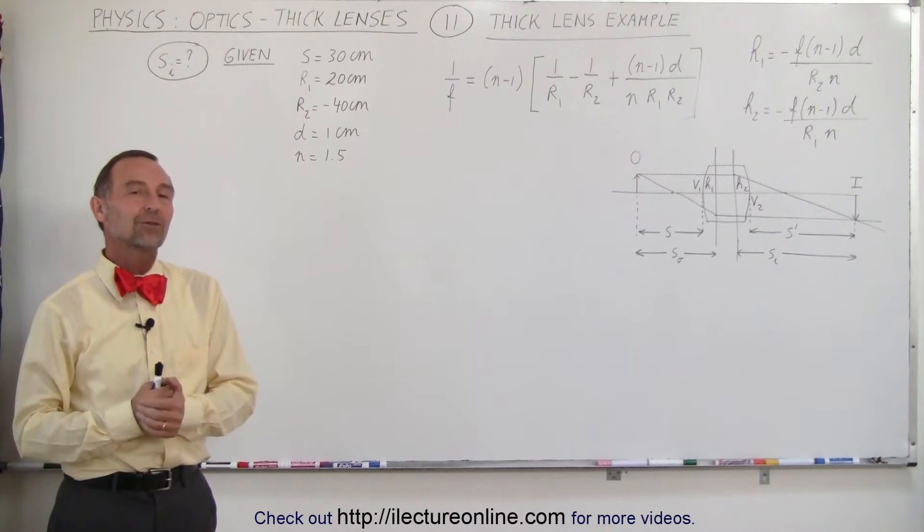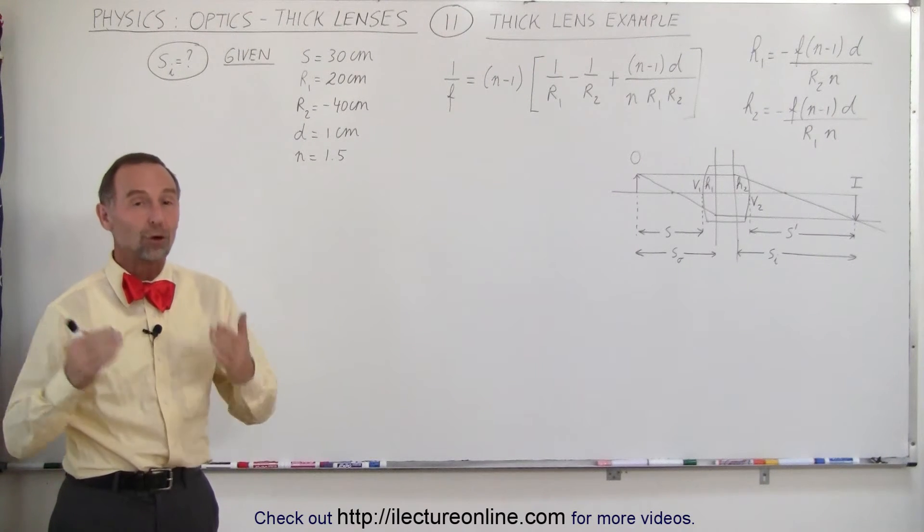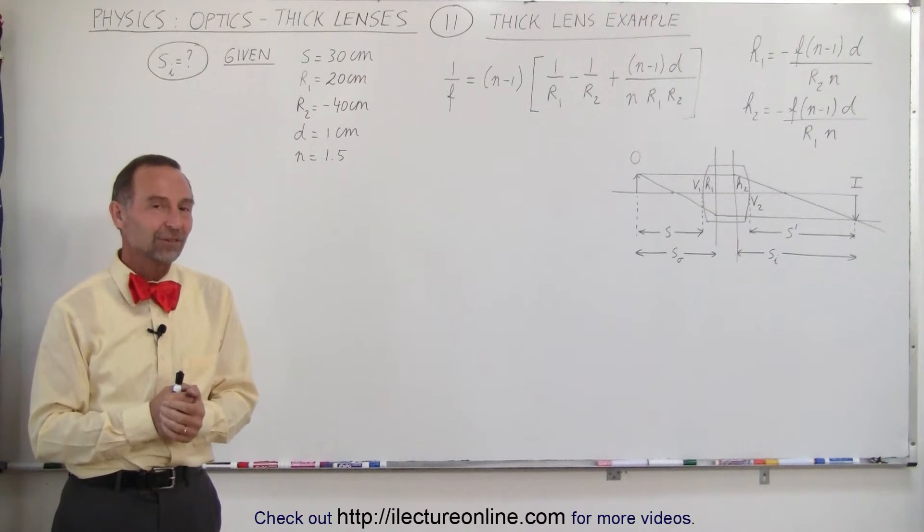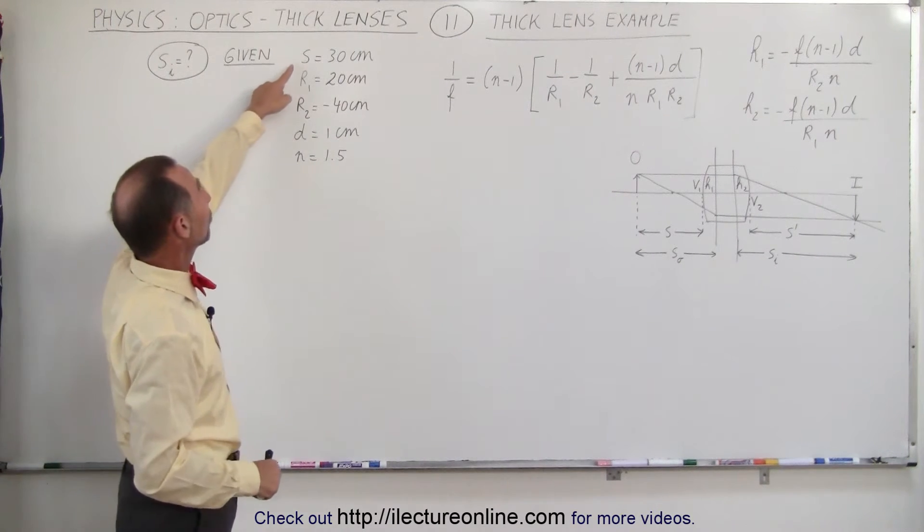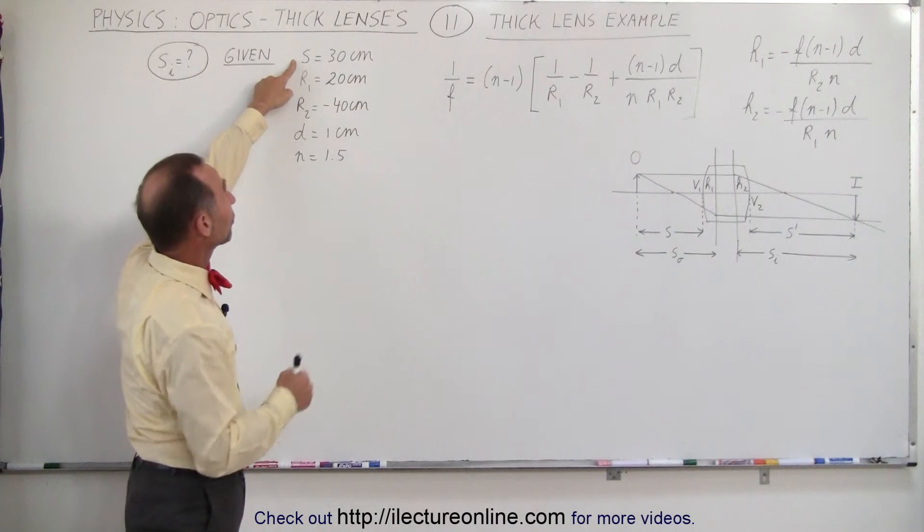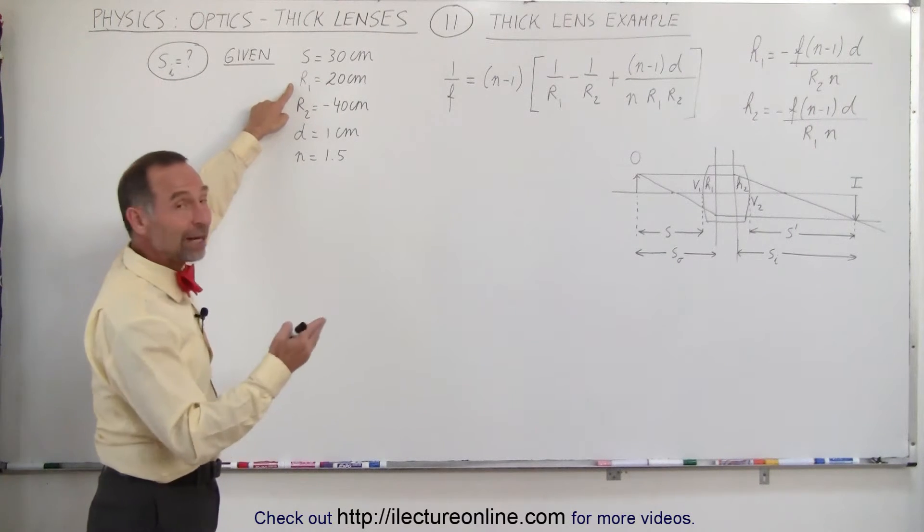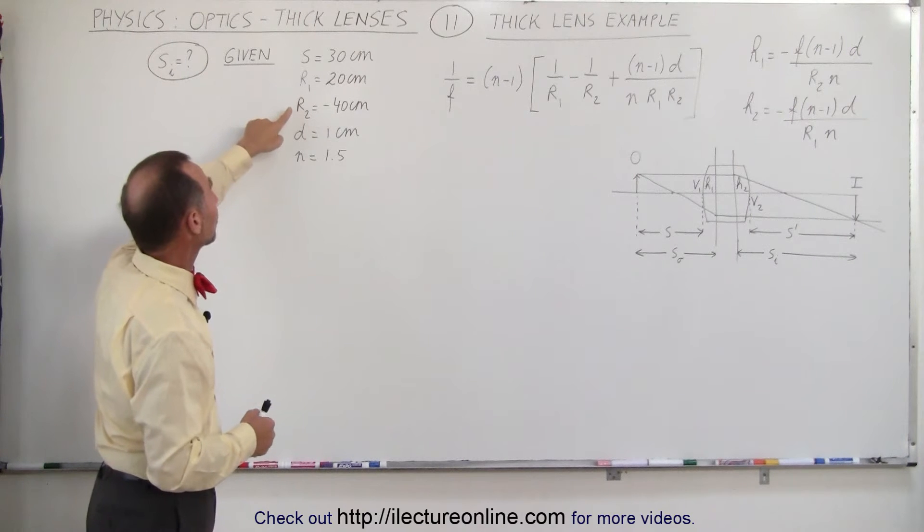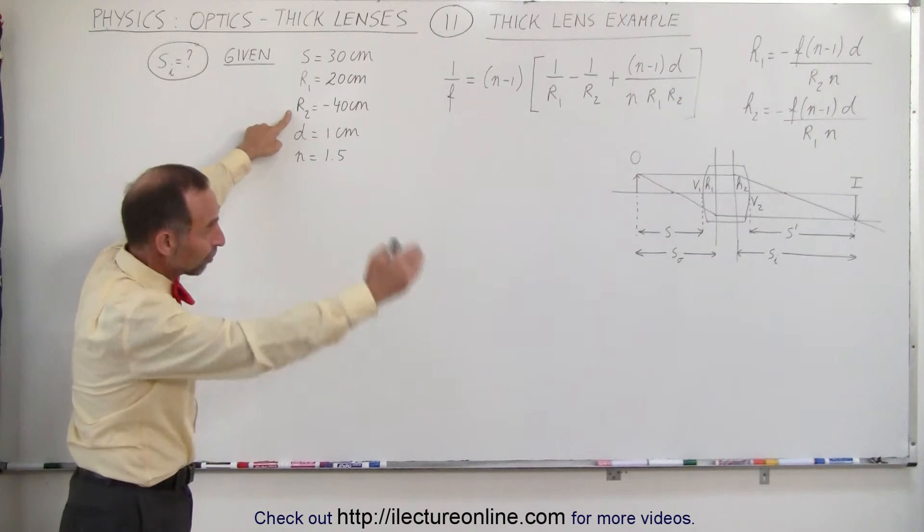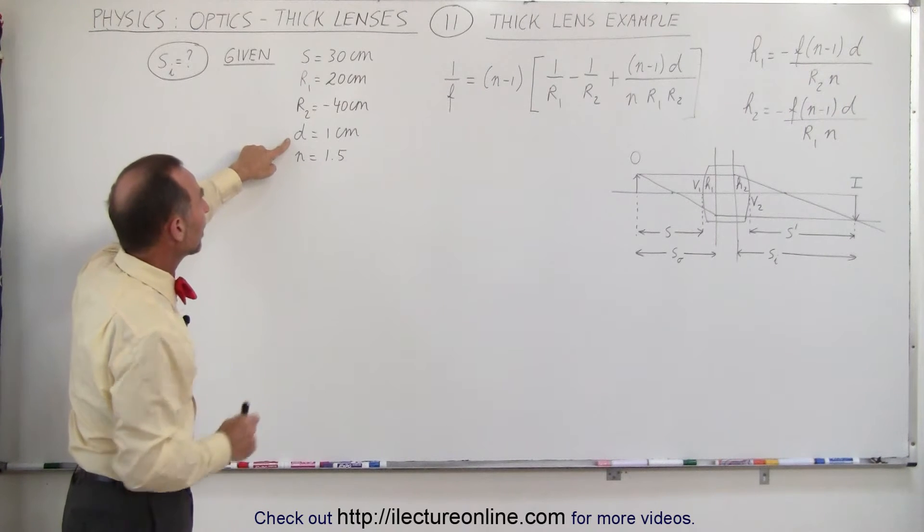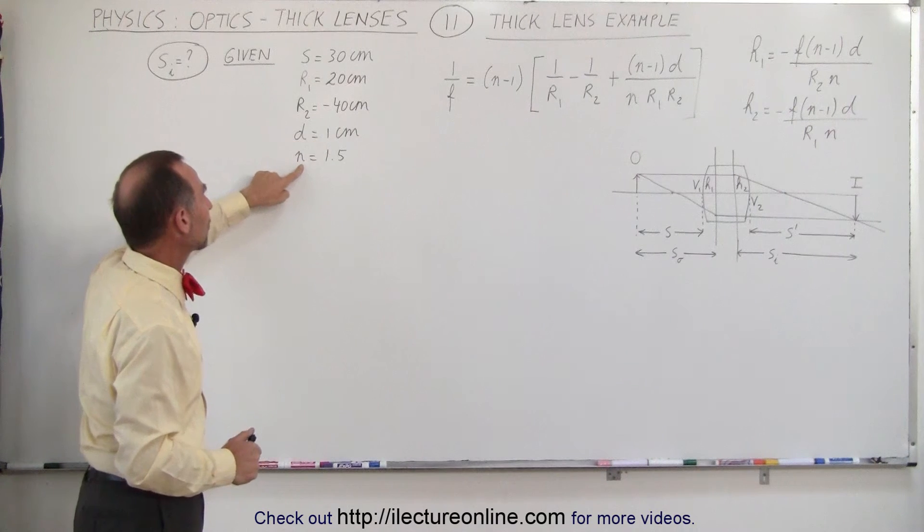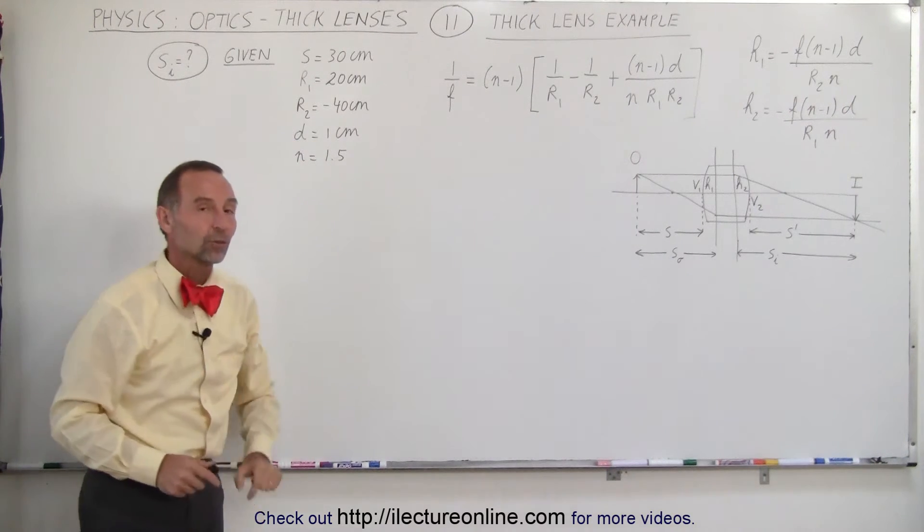Welcome to Electronline. Now let's put everything into practice that we've learned so far about thick lenses. Here what we've been asked to do, given that the distance from the object to the lens is 30 centimeters, the radius of the front side is 20 centimeters, the radius of the back side, since it's bulging outward, is minus 40 centimeters, the thickness of the lens is 1 centimeter, and the index of refraction of the lens material is 1.5.